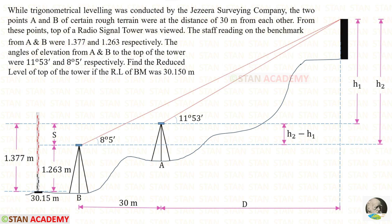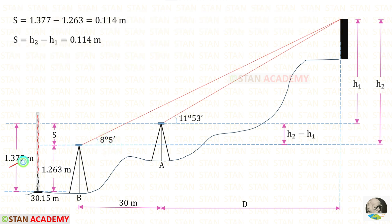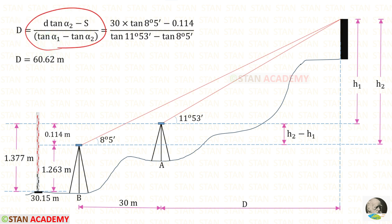First we check the staff readings: from station A it is 1.377 and from station B it is 1.263. Station A gives a bigger value, so the instrument axis at station A is higher than at B. S equals 1.377 minus 1.263, giving S equal to 0.114 meters. Also, S equals H2 minus H1. Using the distance formula with small d equal to 30, alpha 2 equal to 8° 05', S equal to 0.114, and alpha 1 equal to 11° 53', we get the distance D equal to 60.62 meters.